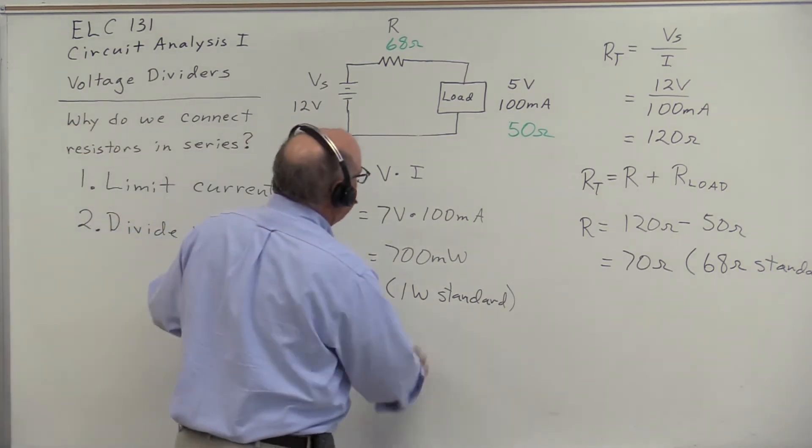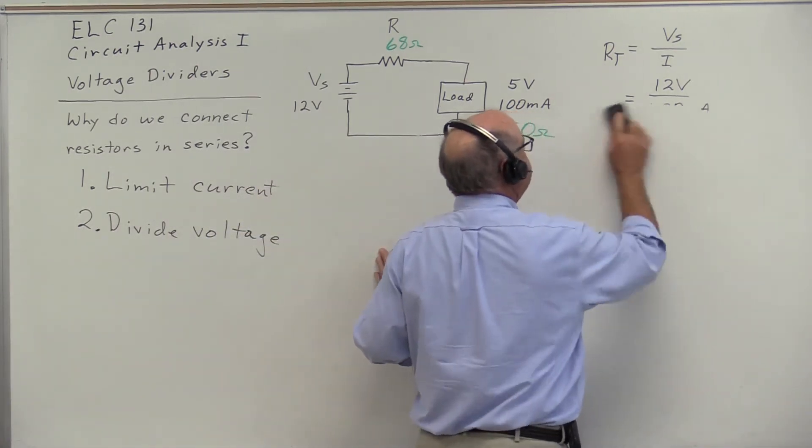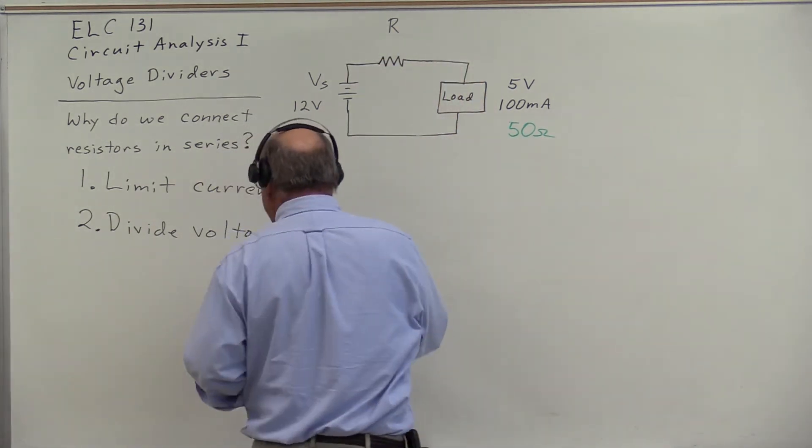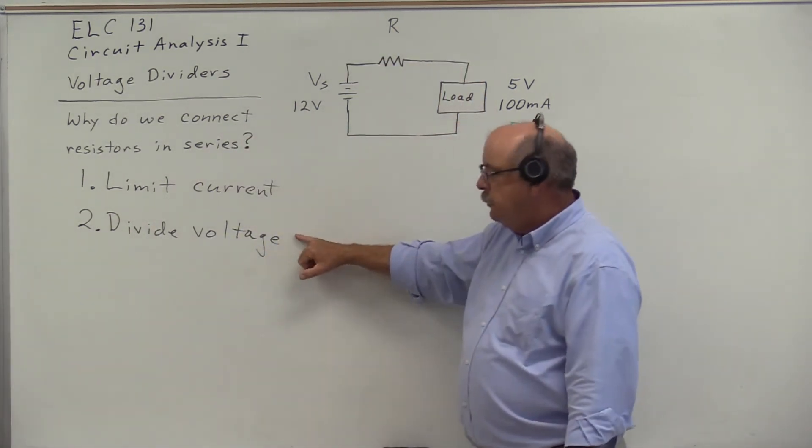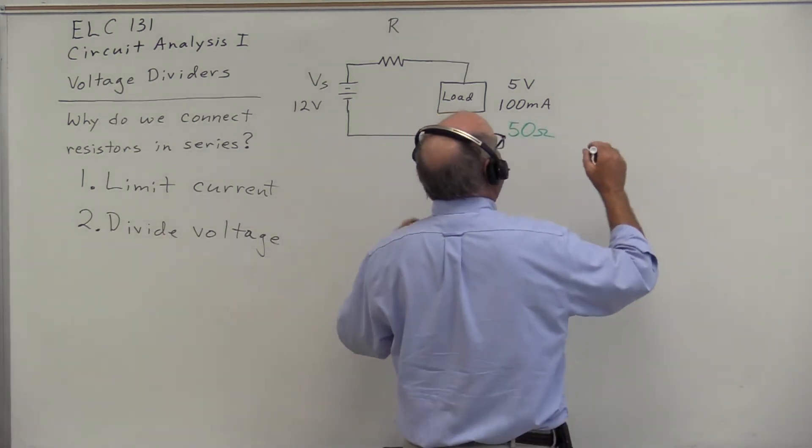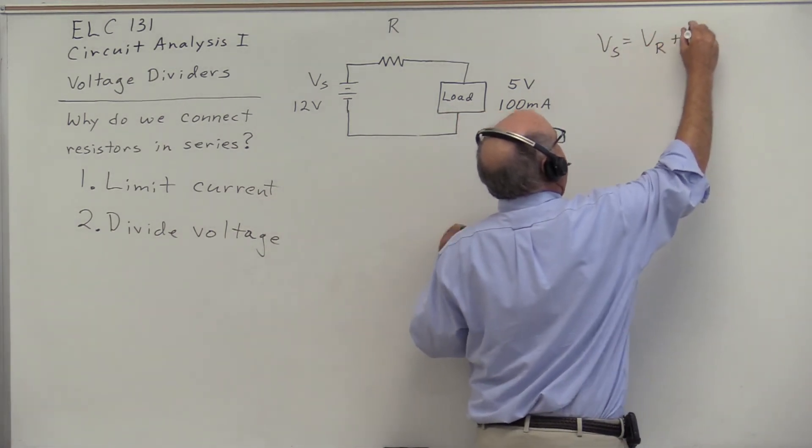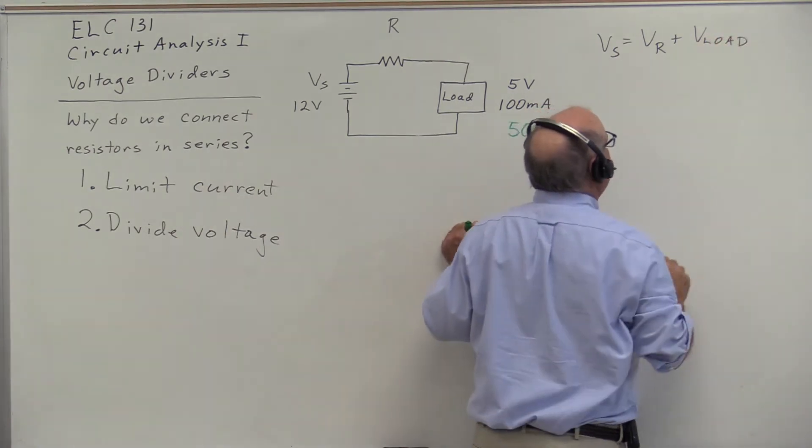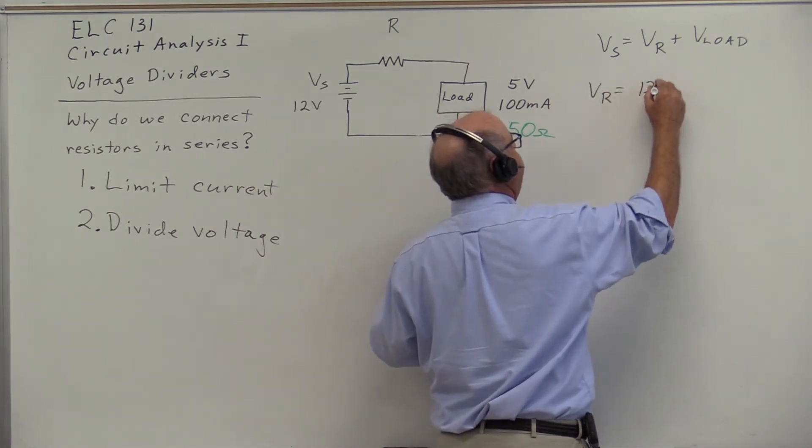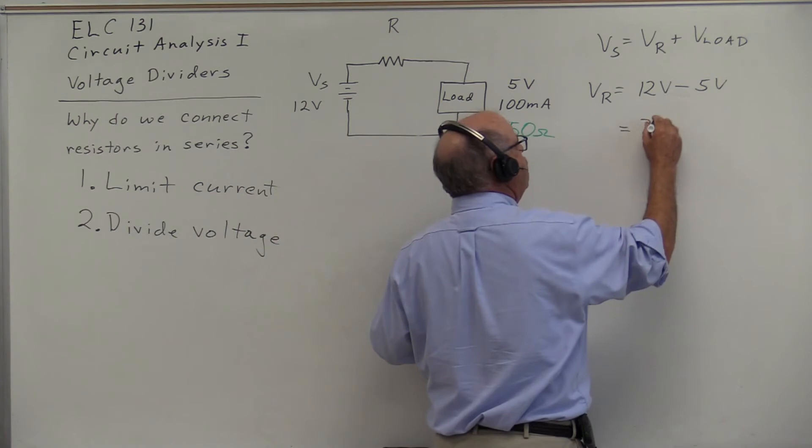Approaching this problem from another direction, we could look at using resistors in series to divide voltage. In this circuit, V_source equals V_R plus V_load. We know that the resistive voltage will be 12 volts minus 5 volts, or 7 volts.